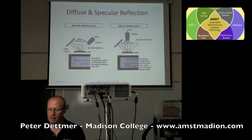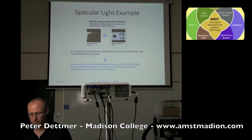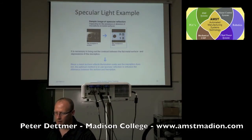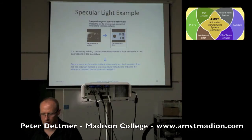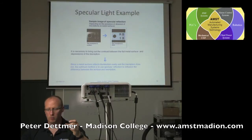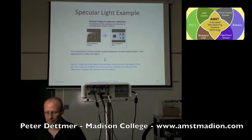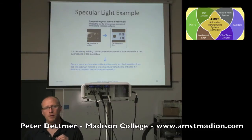So depending on what you want to highlight — the part or the letters in this case — it's driven by your application. Here are some specular examples. If you simply look straight down the part, depending on whether you want to measure the hole or look for the stamped numbers, using specular reflection gives a much crisper image.